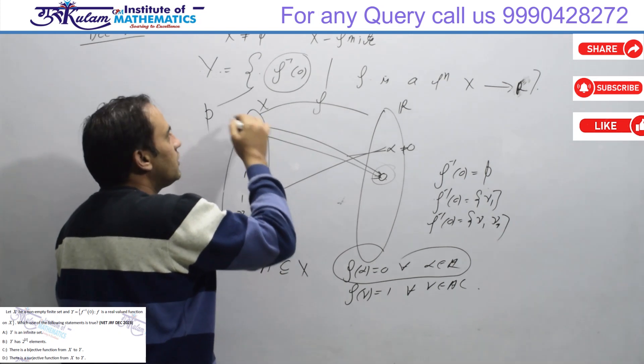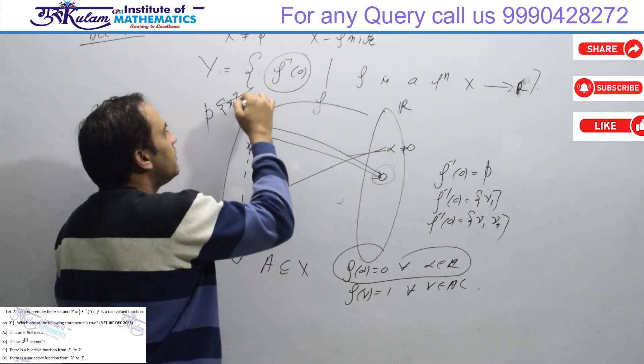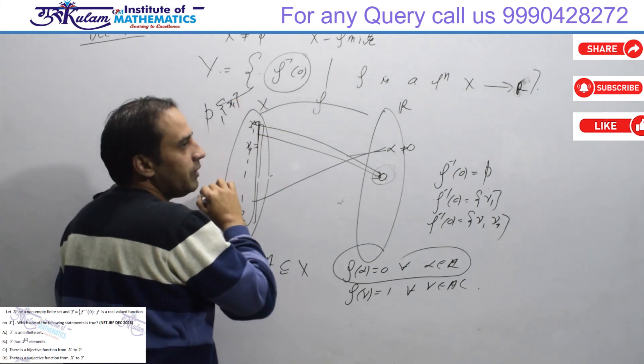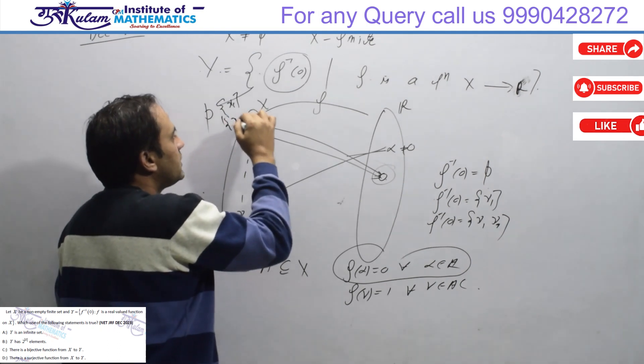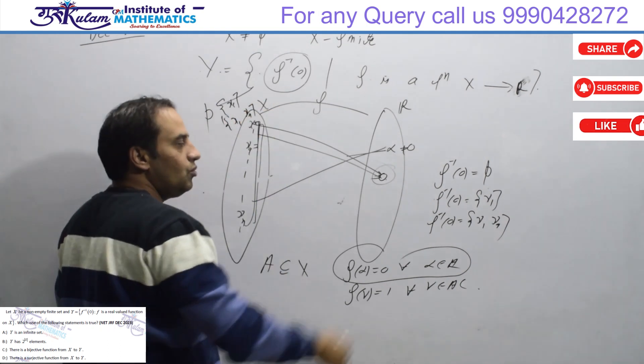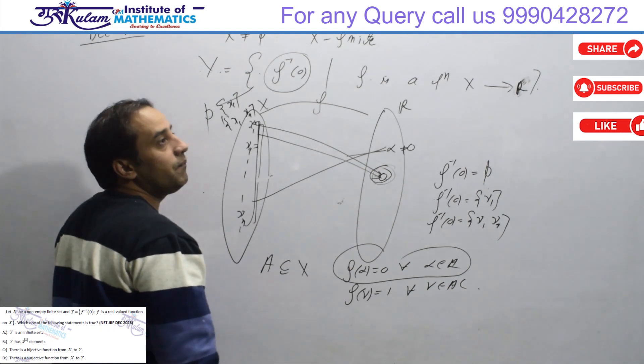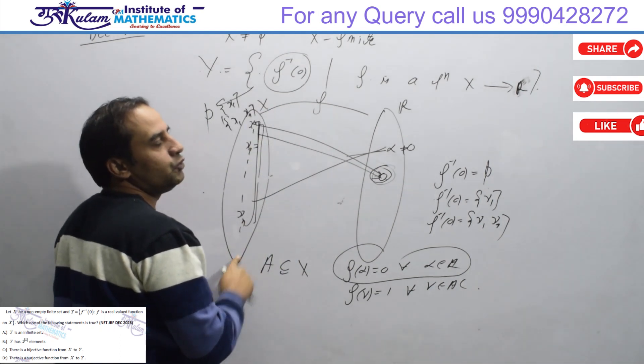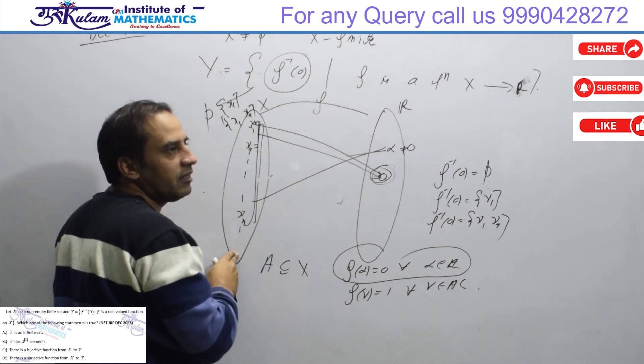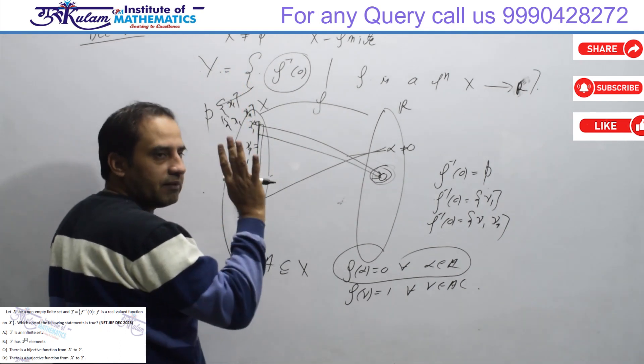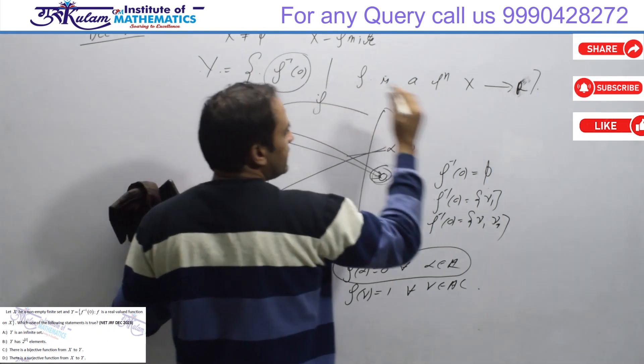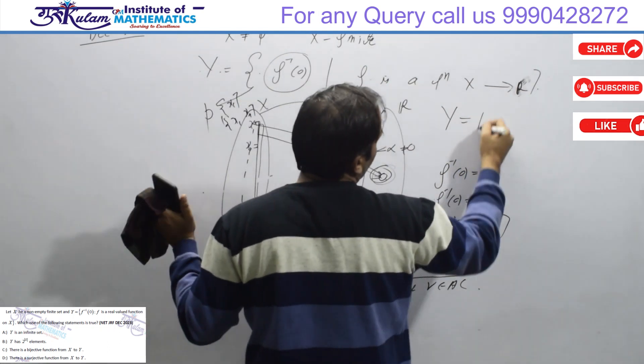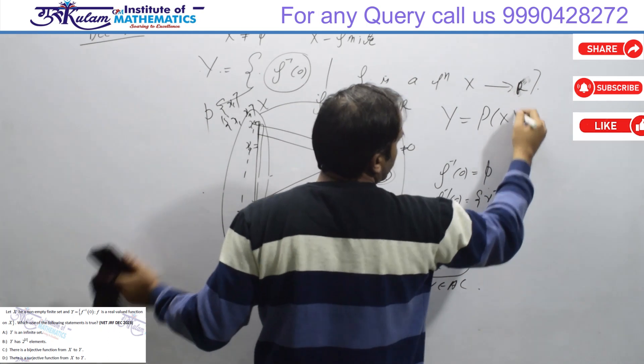The element of premise could be just x1, or x1 and x2, and so on. So f inverse 0 can be any subset of X. Whatever comes will always be a subset of X, because pre-image cannot have more elements than X. So Y is basically the power set of X.